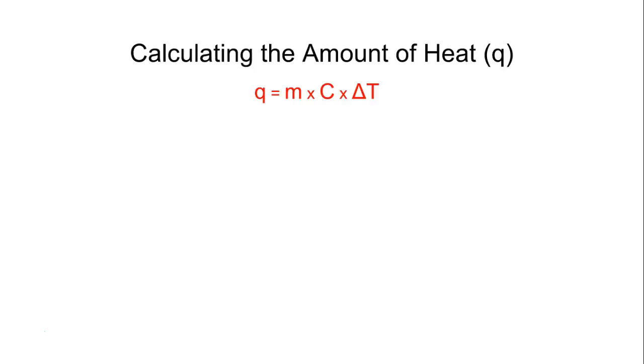So we can use specific heat and our heat formula to calculate many different things. What we see here is Q, which is heat, is equal to M, which is mass, times the specific heat represented by the letter C, times delta T, which is our change in temperature. Now most of the time when we deal with heat, it is an absolute value. It's always going to be a positive number, but we just need to talk about whether the heat was gained or lost in this situation.